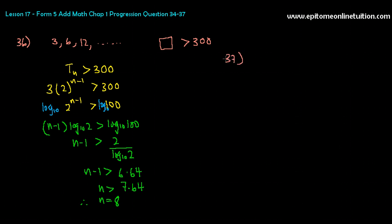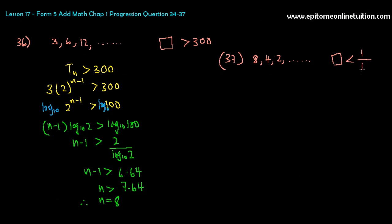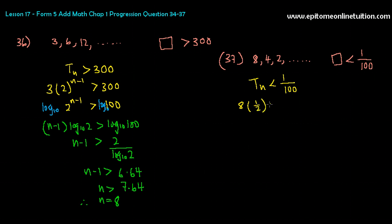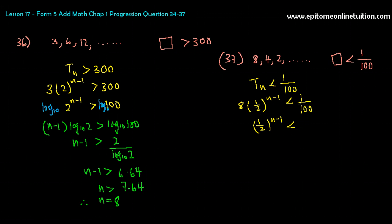Let's look at question 37, because 37 is also similar. Question 37 says: which is the first term of GP 8, 4, 2, and so forth that is less than 1 over 100? So therefore, again, you're looking for Tn which is less than 1 over 100. Same thing: A is 8, R is half. So 8 times (1/2) to the power n minus 1 is less than 1 over 100. 1 over 100 divided by 8 is 1 over 800.